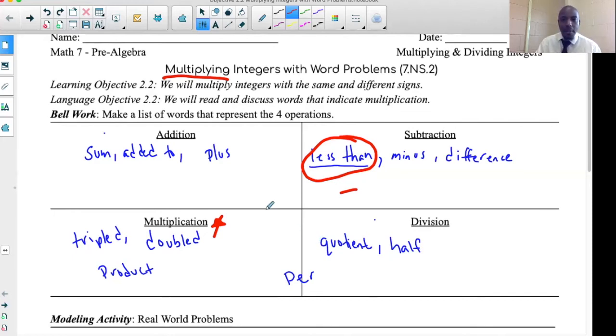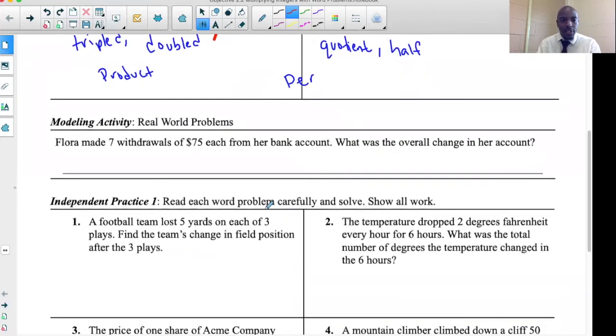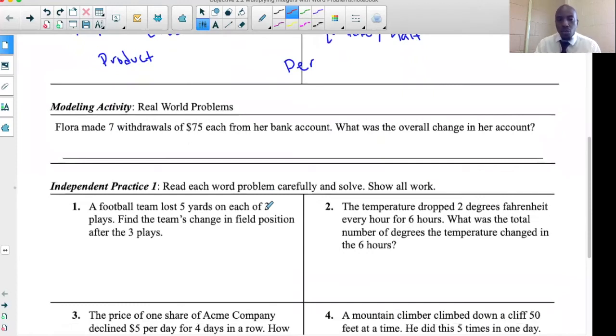Let's look straight into the modeling. It says here, Flora made seven withdrawals of $75 each from her bank account. What was her overall change in her account? We're talking about real life money. We're talking about this person named Flora. They're going to the bank, they're going to get some cash money.